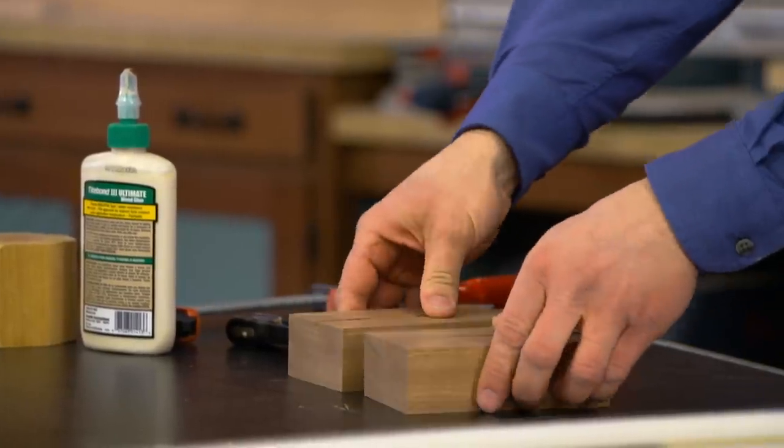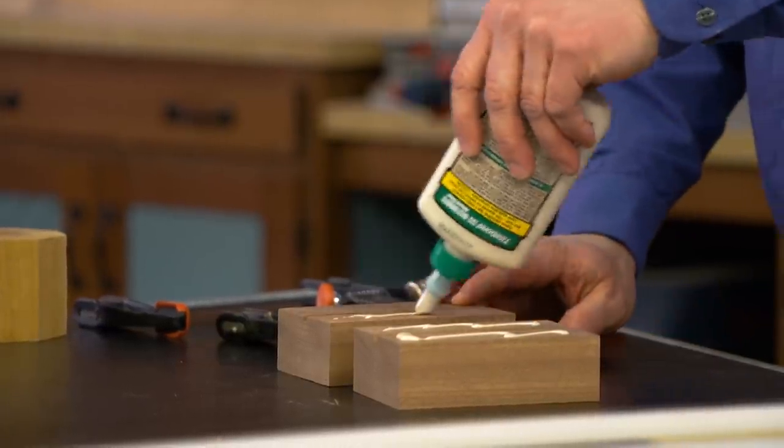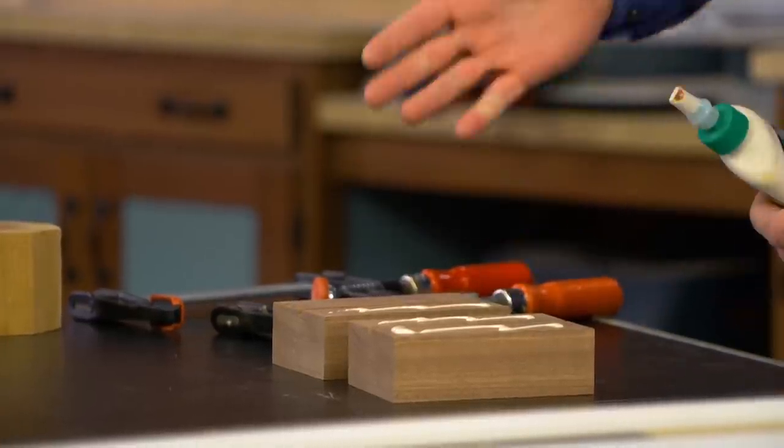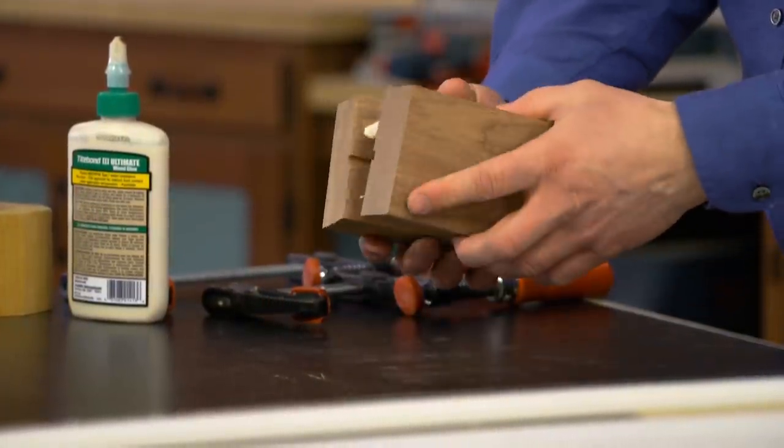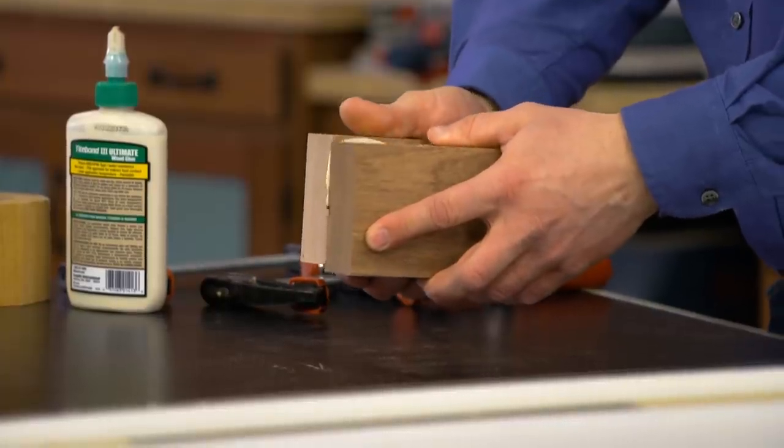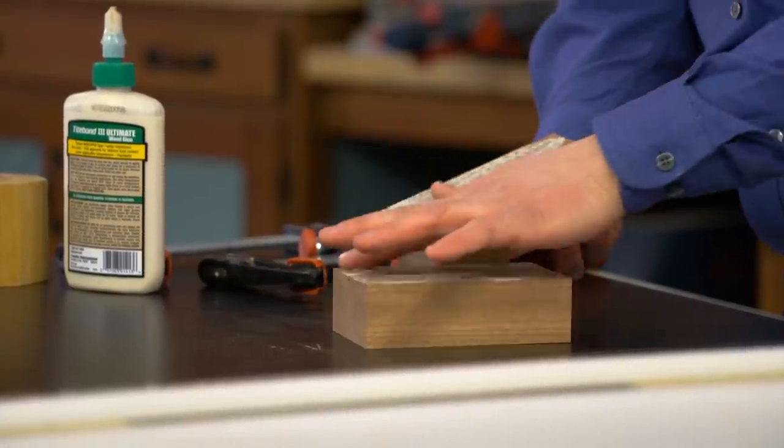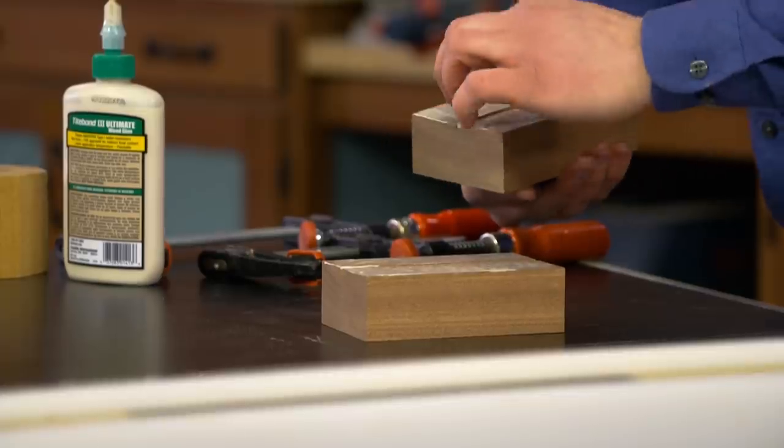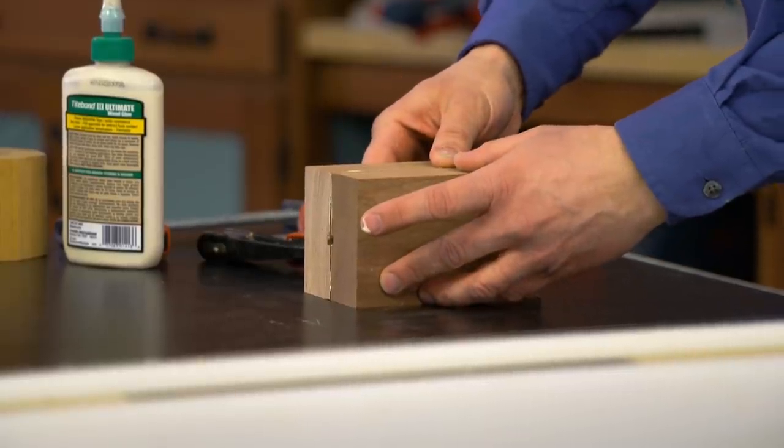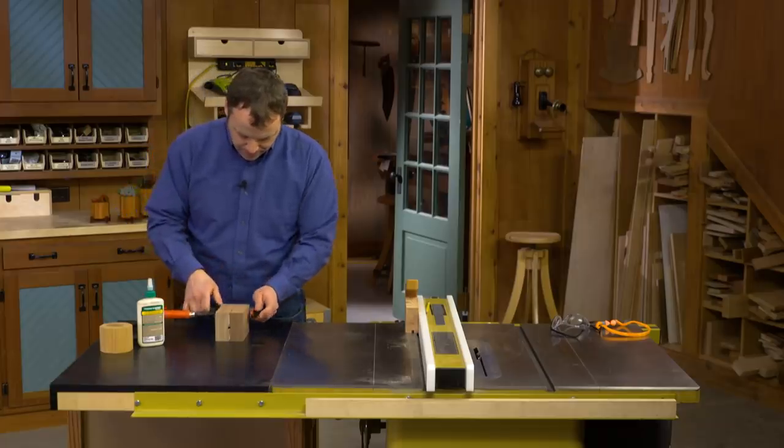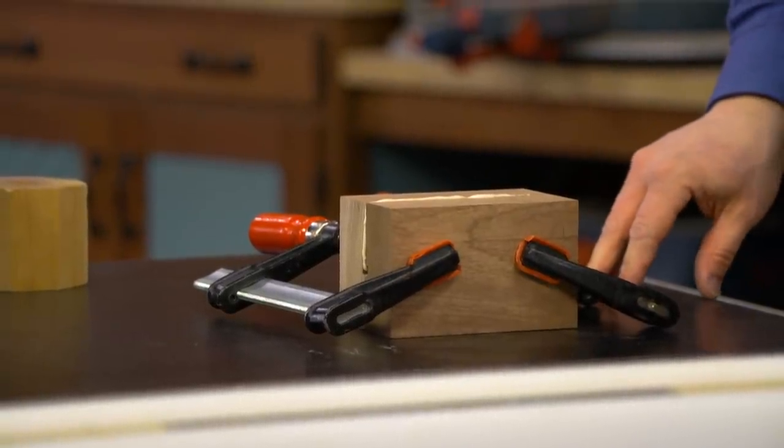Now I can glue these up and the key thing here is I want to make sure that I apply a good amount of glue to get a good strong joint, but what I don't want to do is get glue into the groove where I could clog it because that defeats the whole purpose. So I'll put the glue on and then I'll just put them together and spread it around a little. I'll use the finger brush a little bit just to make sure I have a good amount of glue there and I'll apply some clamps. Now we'll let that dry a little bit before we move on to the next step in the process.